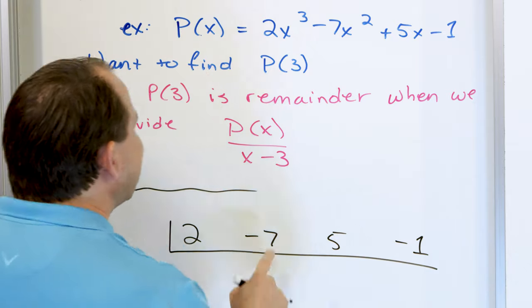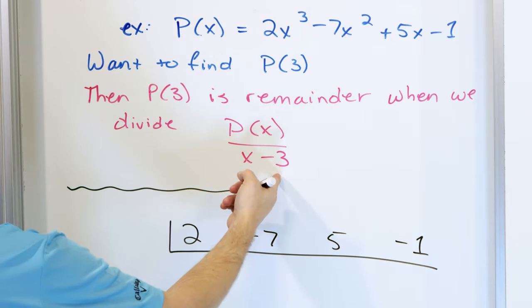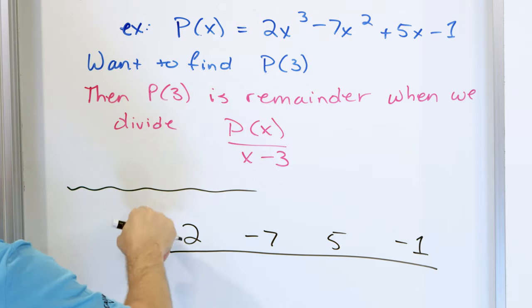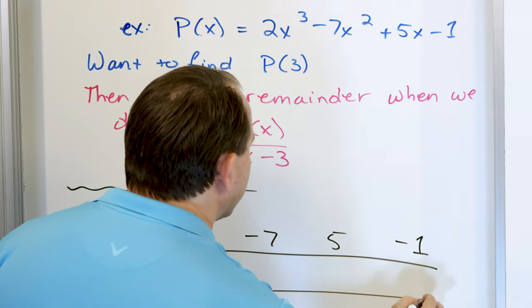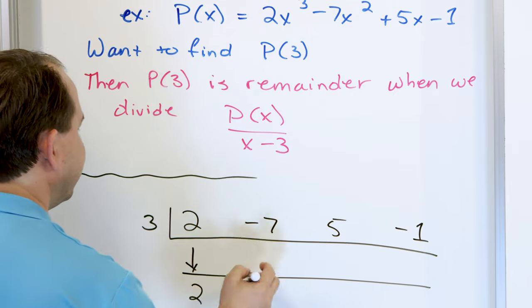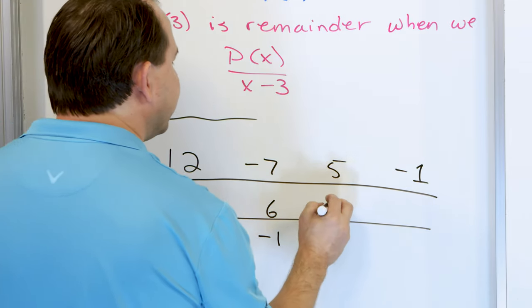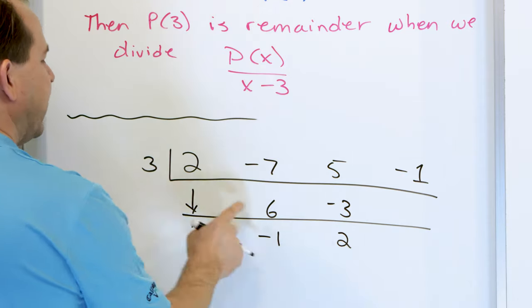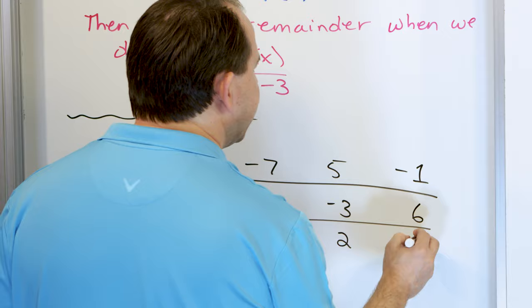I'm going to do this — I need to divide by x minus 3. We know that for synthetic division, I put the opposite sign, so negative 3 becomes positive 3. I draw my horizontal line, drag the 2 down, 3 times 2 is 6, add to get negative 1, 3 times negative 1 is negative 3, add to get 2, 3 times 2 is 6, and add those together to get 5.